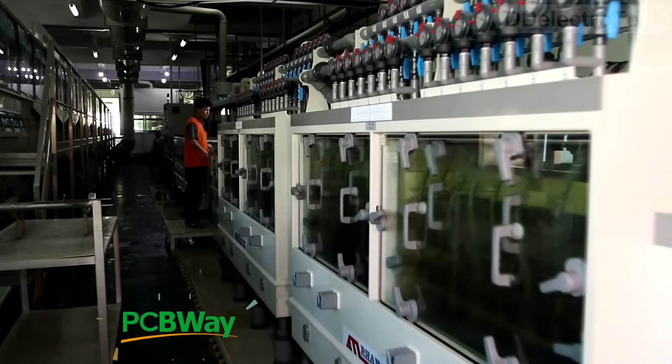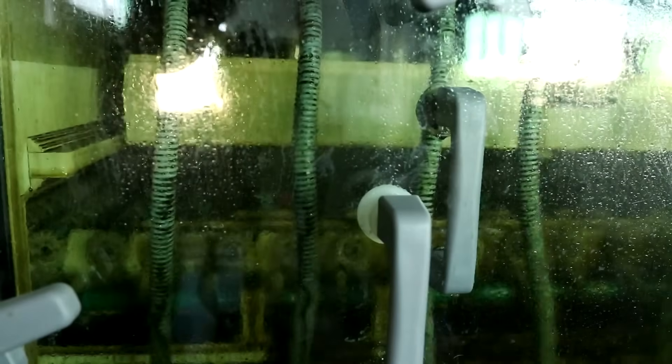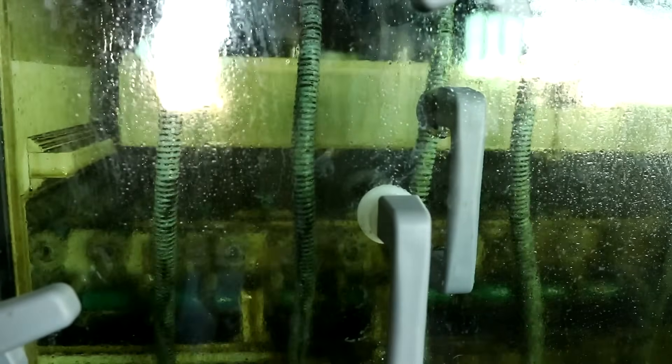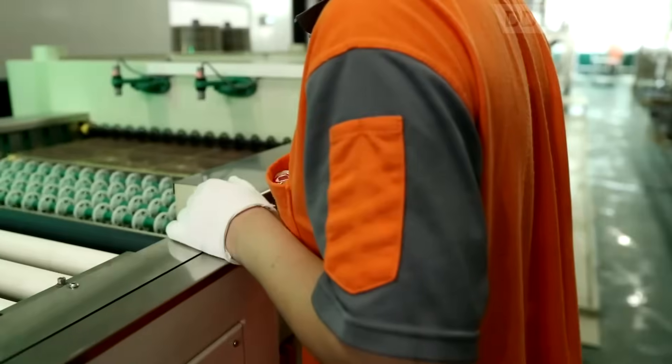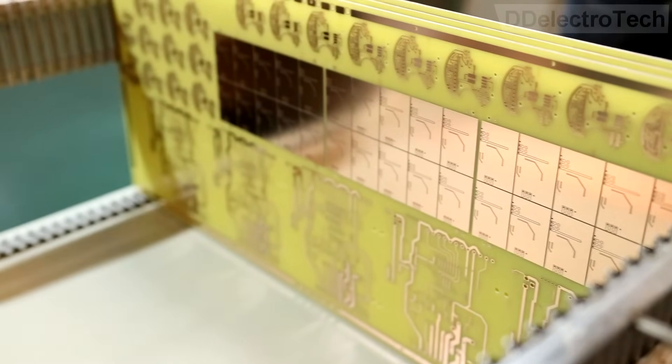Then the board is sent for etching. This process is to remove the unwanted copper using a powerful alkaline solution. After etching, the boards need to be cleaned and washed to remove the excess chemical solution.